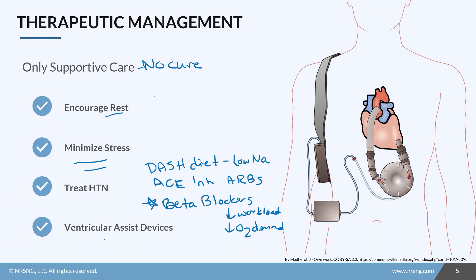In the later stages of cardiomyopathy, it's possible the patient could need a heart transplant. One thing we can do is insert a ventricular assist device as a bridge to heart transplant. The purpose of the device is to pull blood out of the left ventricle and pump it into the aorta so it can be delivered to the body, since the left ventricle can't do that by itself. These are usually used as a bridge to heart transplant.